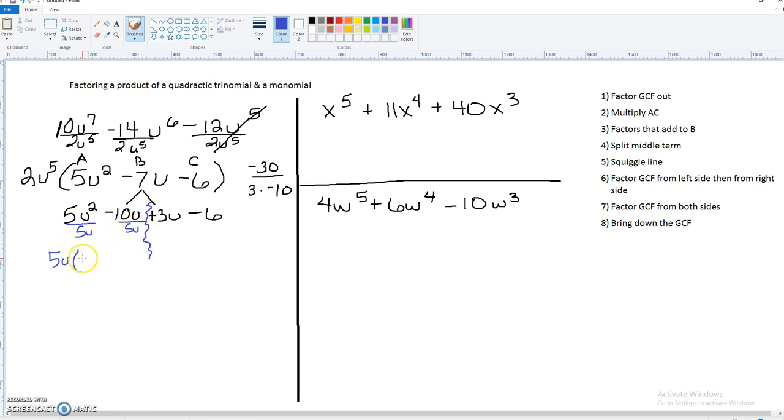Now on the left side of our squiggle line, we can take a 5u out. So now we've got u minus 2. So of course, this cancels, and 2 minus 1 is 1. Negative 10 divided by 5 is negative 2, and u and u canceled.